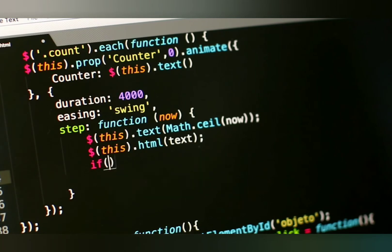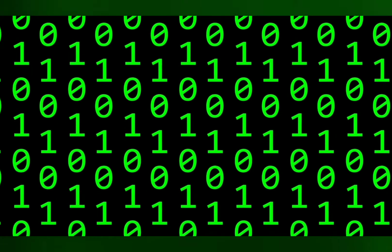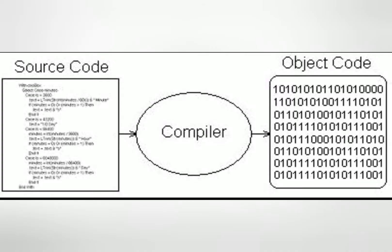Language translators or language processors were developed to convert the language into machine language and check its syntax for errors. Programs written in high-level language or assembly language are called the source code, whereas the converted programs in machine language are called object code.